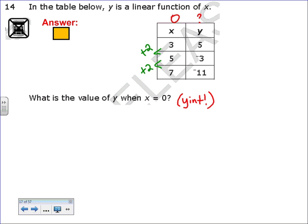One way to do this is to find out what's happening. Anytime they give you a table, you need to find the difference. From 3 to 5, I'm going up 2. 5 to 7, I'm going up 2. From 5 to negative 3, I'm subtracting 8. From negative 3 to negative 11, I'm subtracting 8. So if I was finding my slope, it's change in y over change in x, down 8 over 2, which reduces to negative 4 over 1. That means every time I go down 4 on my y, I go up 1 on my x.